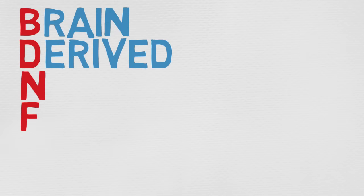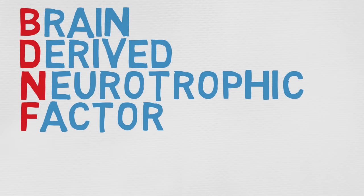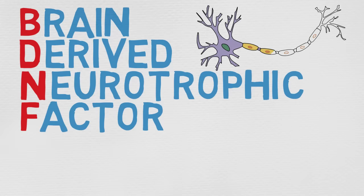BDNF, or brain-derived neurotrophic factor, is a powerful protein that stimulates the production of new brain cells and strengthens existing ones. It's found in the hippocampus, cortex and basal forebrain. All these brain areas are vital to learning, memory and higher thinking.